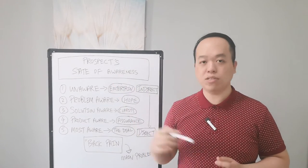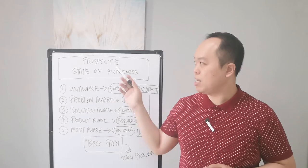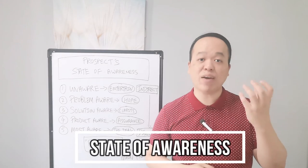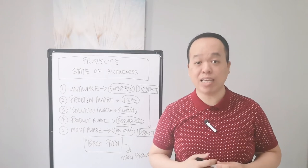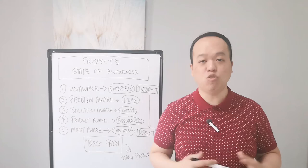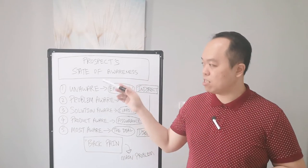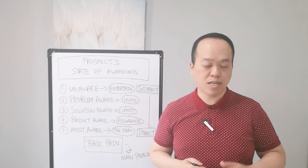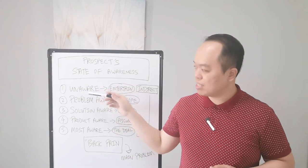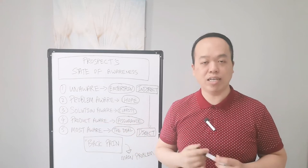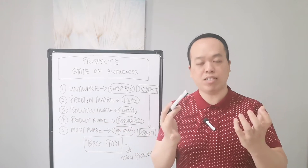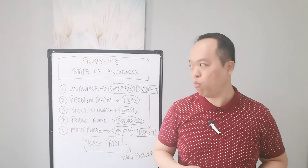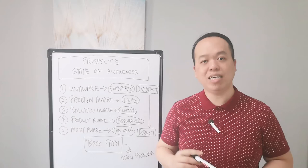This important concept is called the prospect's state of awareness. It was mentioned in the Breakthrough Advertising book written by legendary copywriter Eugene Schwartz. In this book, he talks about five stages of state of awareness, so that when you understand each different stage, you can craft a perfect message to cater to their needs and desires. Let me go through them one by one.